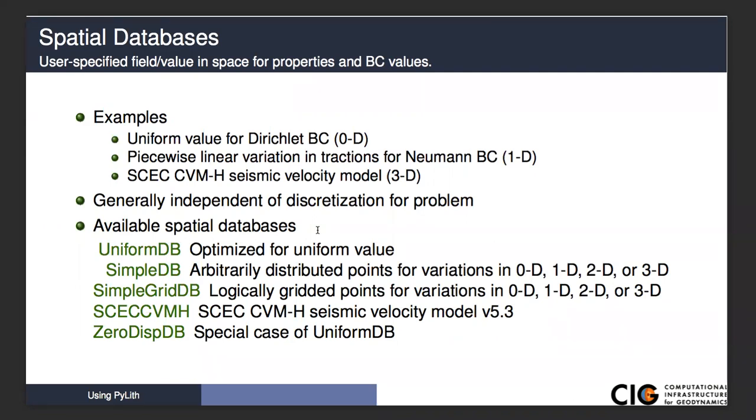We have a simple grid database where you have information on a logical grid. It does not need to be a uniform grid, so you can have irregularly spaced points, but they must be along the coordinate axes. I have values at coordinates in the x direction, another set of coordinates in the y direction, another set in the z direction if it's 3D. The advantage is we can do a binary search on each coordinate direction independently and do linear interpolation of the points at that grid point very, very fast. This is orders of magnitude faster in 3D compared to the simple database.